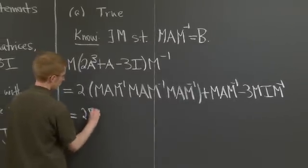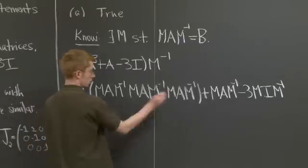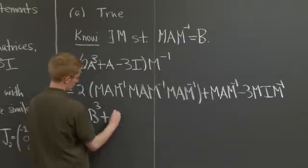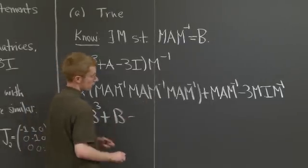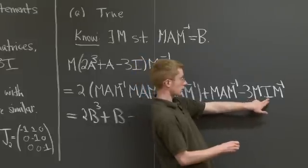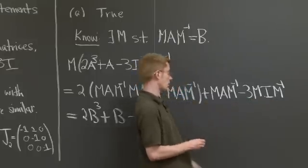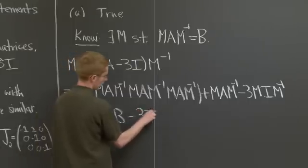Similarly, we have an M A M inverse and an M times the identity times M inverse is B, so we just get 2 B cubed, right, 3 Bs plus B minus, well, M times the identity is just M, so we just get the identity back, and we have 3 times the identity.